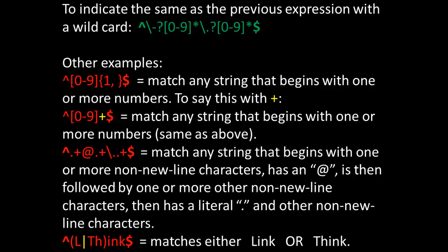For more examples: using caret, [0-9] in square brackets with {1, } in curly braces, and a dollar sign means match any string that begins with one or more numbers. You can also express that with the addition operator — caret, [0-9], plus, dollar sign — which means match any string that begins with one or more numbers, same as above.